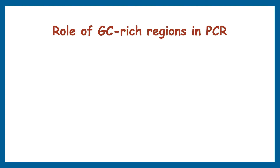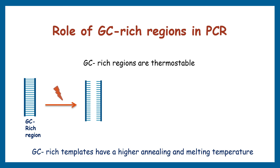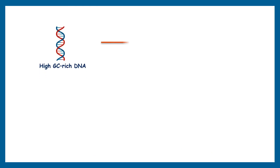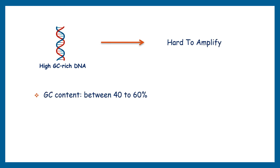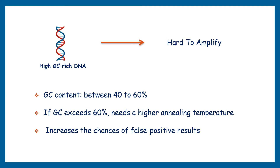Coming to the role of GC-rich regions in PCR: GC-rich regions are thermostable and require more energy to open the DNA strand. Therefore, GC-rich templates have a higher annealing and melting temperature. The reason is the triple hydrogen bonds between G and C — more hydrogen bonds elevate the energy or temperature requirement for separating double-stranded DNA. Additionally, elevated G and C nucleotides make it harder for primers to amplify the target DNA. It is advisable to select templates with GC content between 40 to 60%. If GC exceeds 60%, the PCR experiment needs a higher annealing temperature, increasing the chances of non-specific primer binding and consequently false positive results.